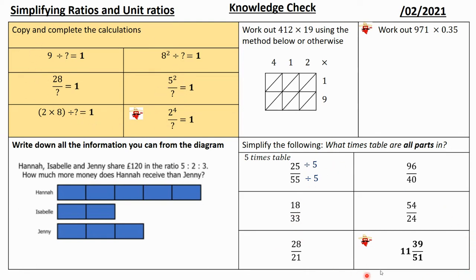This box down here is also really important - we will go into this in a little more detail. This box is all about recapping ratio. Then we've got two multiplication questions - you can do either question, you don't have to do both. It should take you about five or six minutes. Pause the video and give it a really good go.